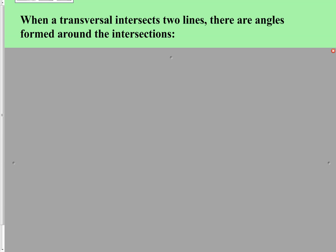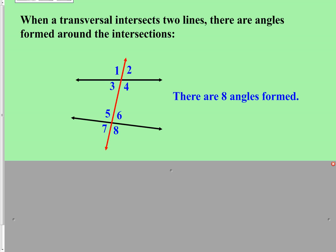When a transversal intersects two lines, angles are formed around the intersections, and our discussion over the next several days will be focused on these angles. Go ahead and copy the diagram we're looking at here, and then we're going to apply several definitions to this same diagram. You can save yourself time by not having to copy the diagram every single time — just get it down once and we will refer back to it as we go.